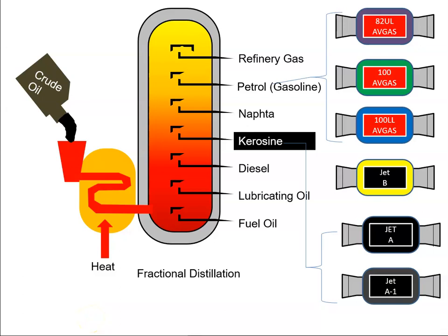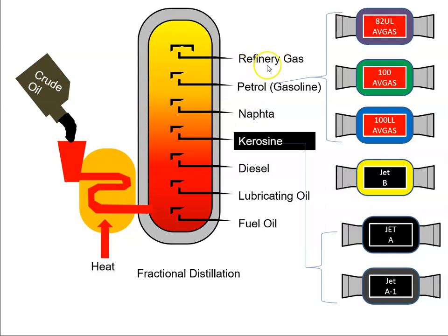When crude oil is brought to the refinery, it is distilled and then depending on the different temperatures, the crude oil becomes either heating fuel oil, lubricating oil, diesel, kerosene, nafta, petrol, or refinery gas. What interests us in aviation is kerosene and gasoline or petrol.